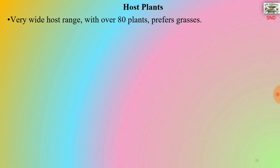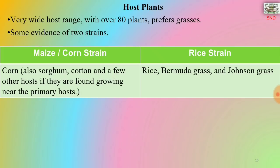The host plants include a very wide host range with over 80 plants. It prefers grasses. There is evidence of two strains: first is the maize strain or corn strain, and second is the rice strain. The corn strain infests corn, also sorghum, cotton and a few other hosts if they are found growing near the primary host.